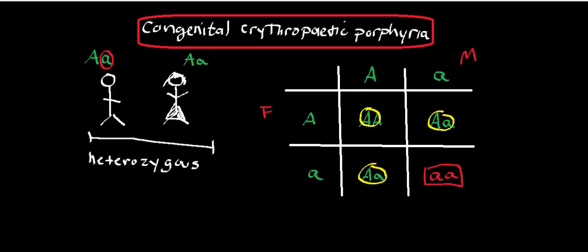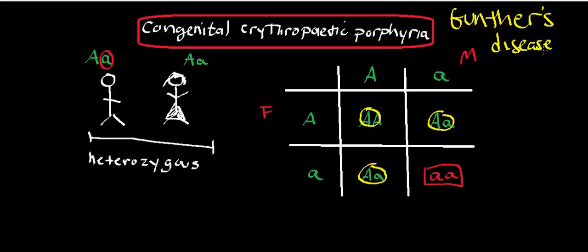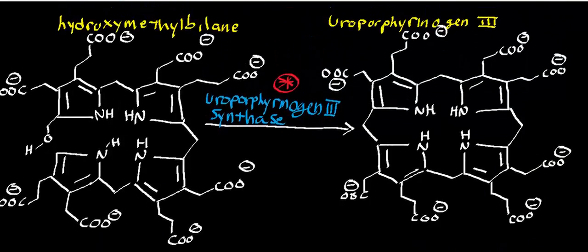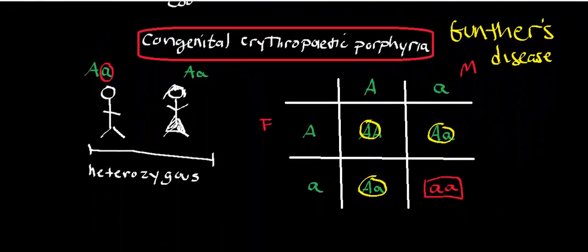Just like typical porphyrias, you get things like nausea, constipation, and vomiting. You also have lots of skin problems and trouble being out in sunlight — things like blistering, scarring, and lesions. Another name for this disease is Gunther's disease, named after a German chemist who basically discovered it. On top of all those symptoms, the biggest consequence of a deficiency of any enzyme in heme synthesis is, of course, that you can't synthesize heme, or at least have trouble doing so.